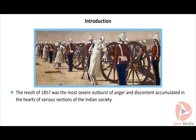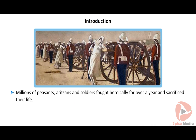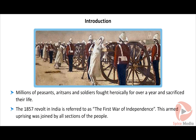The revolt of 1857 was the most severe outburst of anger and discontent accumulated in the hearts of various sections of Indian society. This revolt was supported by all sections of people. Hindus and Muslims kept their religious differences aside and fought together in order to free themselves from foreign subjugation. The great armed rebellion which took place in India in 1857 was called the first war of independence.